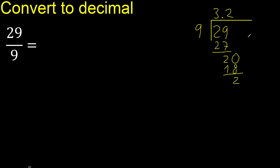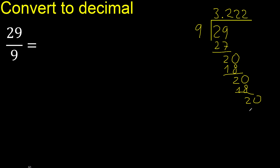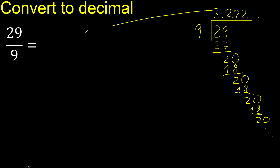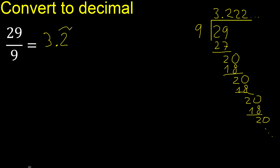Next. There is no number, always complete with 0. Point is here. 20 — 9 multiplied by 2 is 18, subtract. This repeats. After the point, 2 repeats. Like this — 2 repeat.